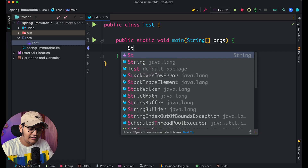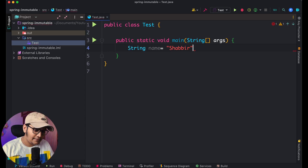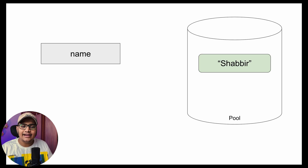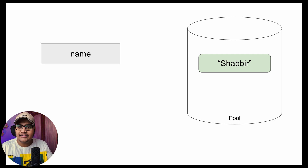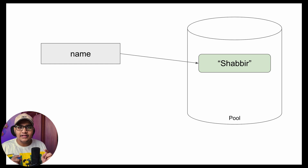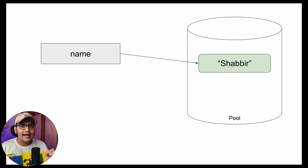If we declare any string in Java — suppose I declare `String name = "Shabir"` — what happens is there is a string pool available within the JVM itself. In that string pool, it will create an object with the value "Shabir", and the variable `name` will be assigned a reference to that particular object.